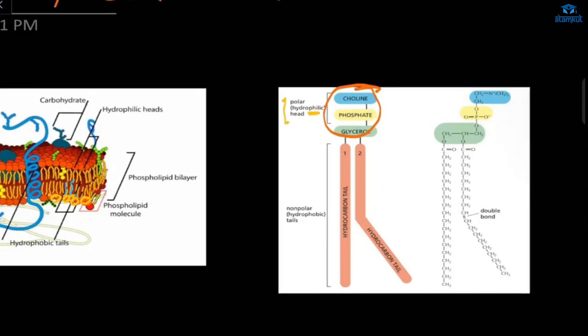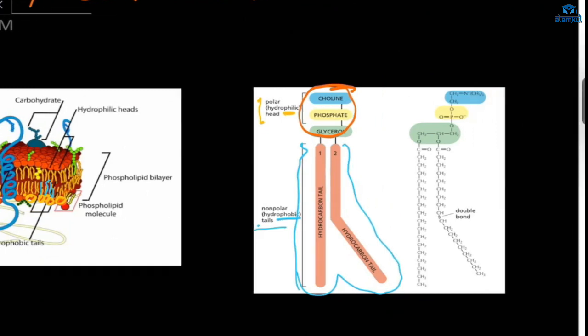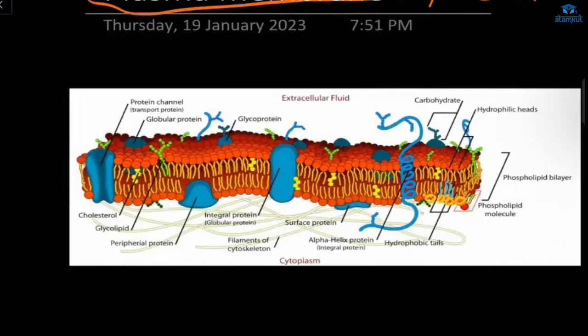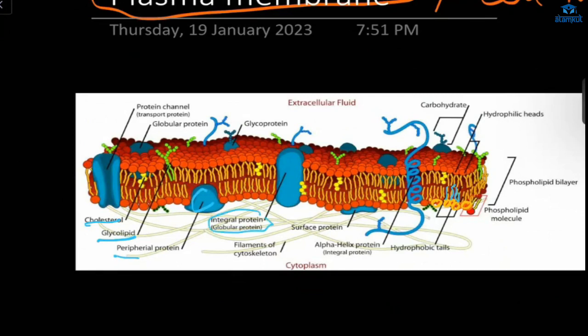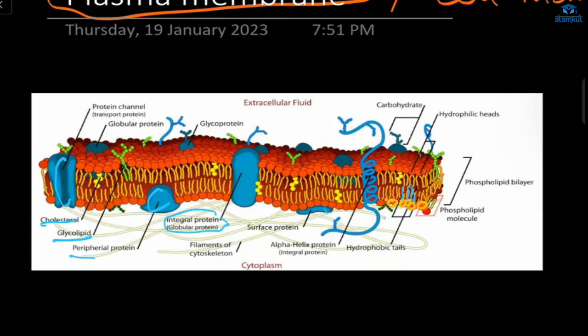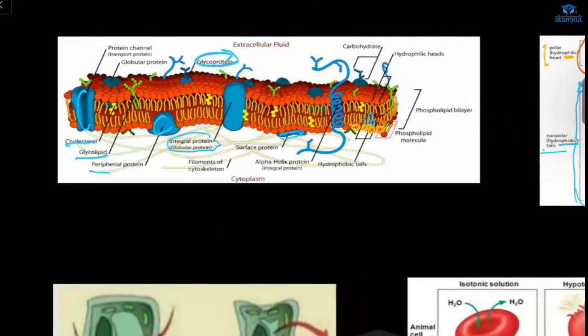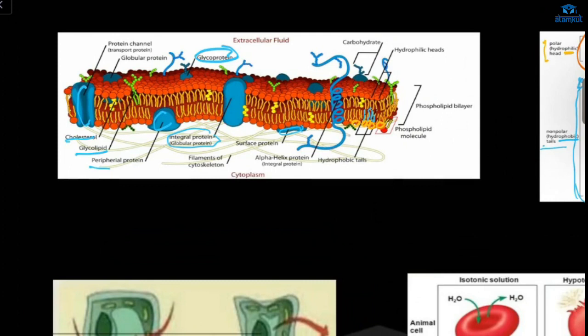And here we have tail. This is hydrophobic. That means this tail is afraid of water. Now this plasma membrane has cholesterol, glycolipid, peripheral protein, integral protein, protein channel, surface protein, and glycoprotein. Now let's see transport through the plasma membrane.